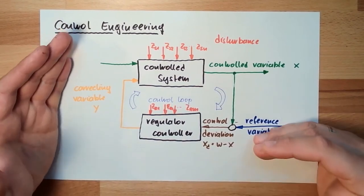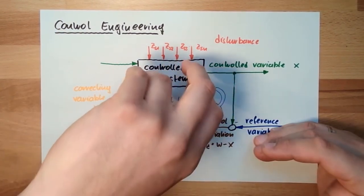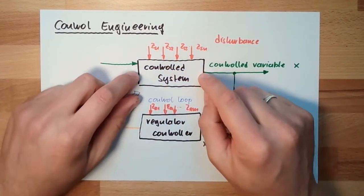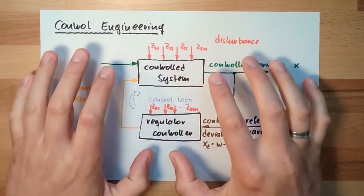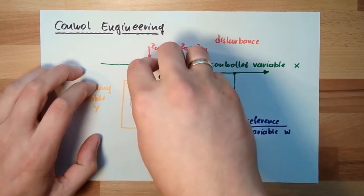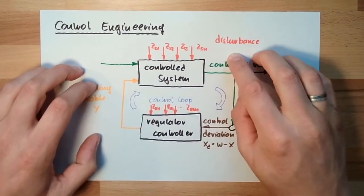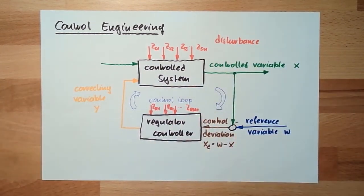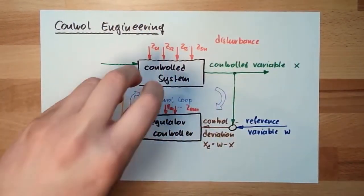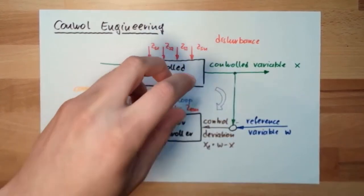Where this regulating is happening is called the control system. This is the part of the control elements where we can influence the controlled variable. Everything else is called the closed loop control system — that is all of it. The control system is specifically where the influencing is happening.